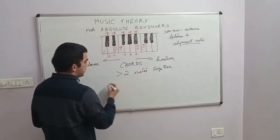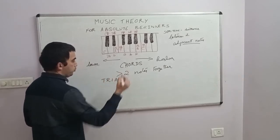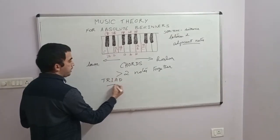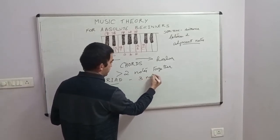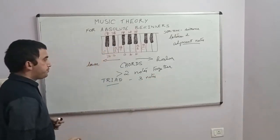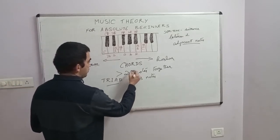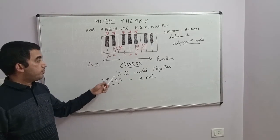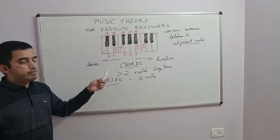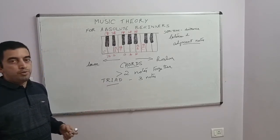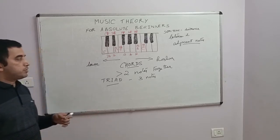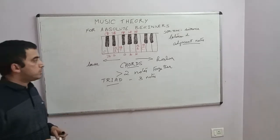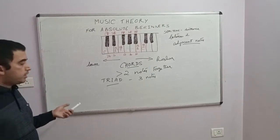There is one more term called a triad. As you can make out, 'tri' means a set of three notes. So what is the difference between a chord and a triad? You can have chords as triads, but chords can also have more than three notes. For example, seventh chords have four notes — that makes a chord. Whereas a triad is specifically a set of three notes. Generally when we start learning chords, we learn the basic triads.